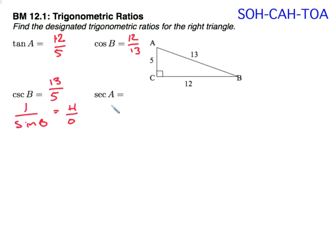And finally, secant of angle A. Secant is the reciprocal of the cosine function. So I will want the adjacent over the, I want the reciprocal, excuse me, the reciprocal hypotenuse over adjacent.